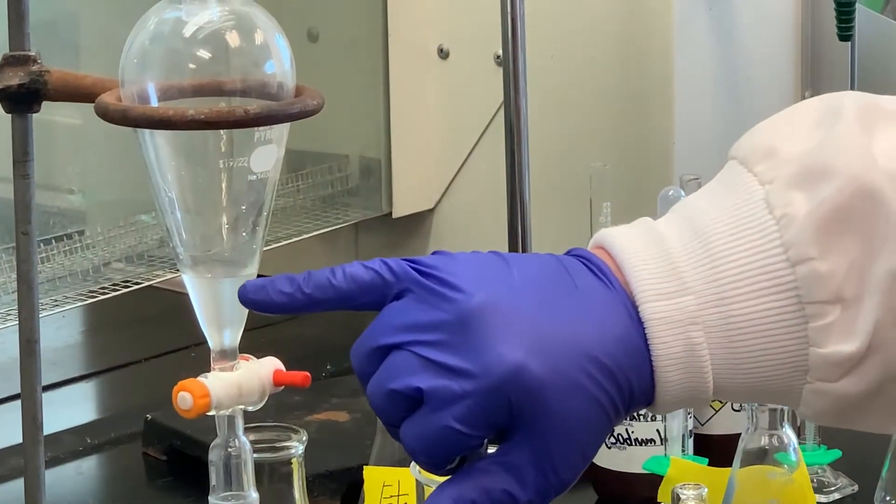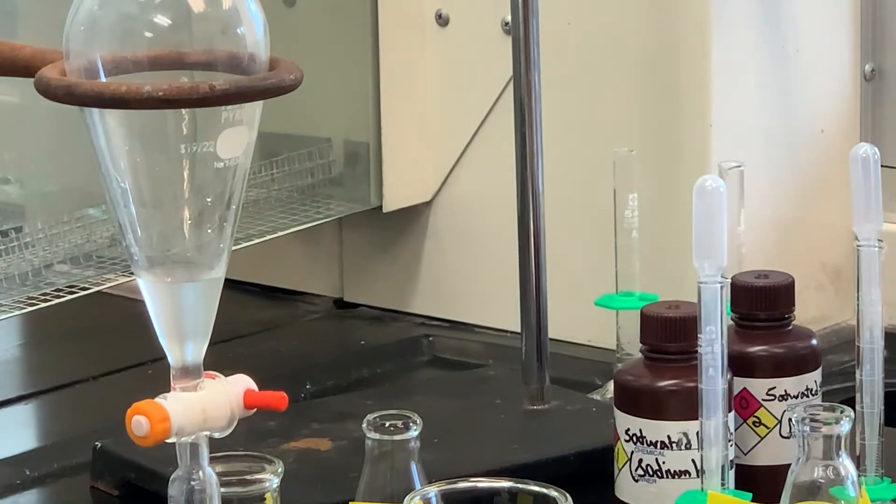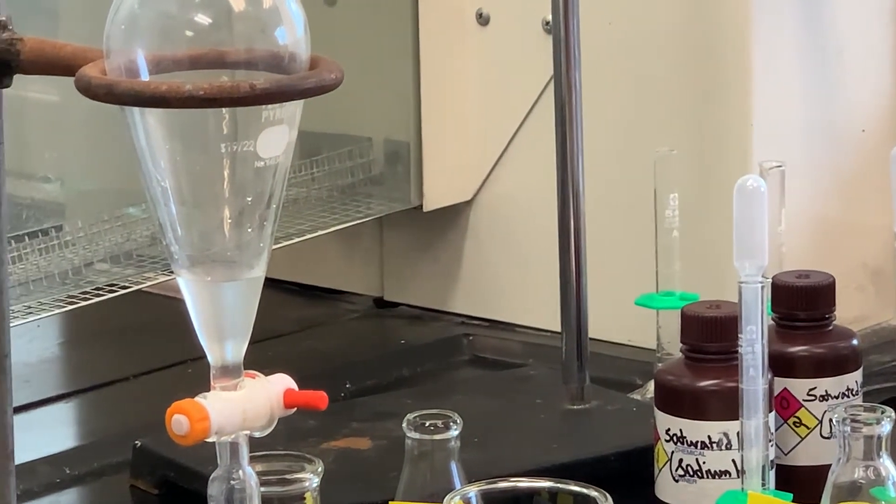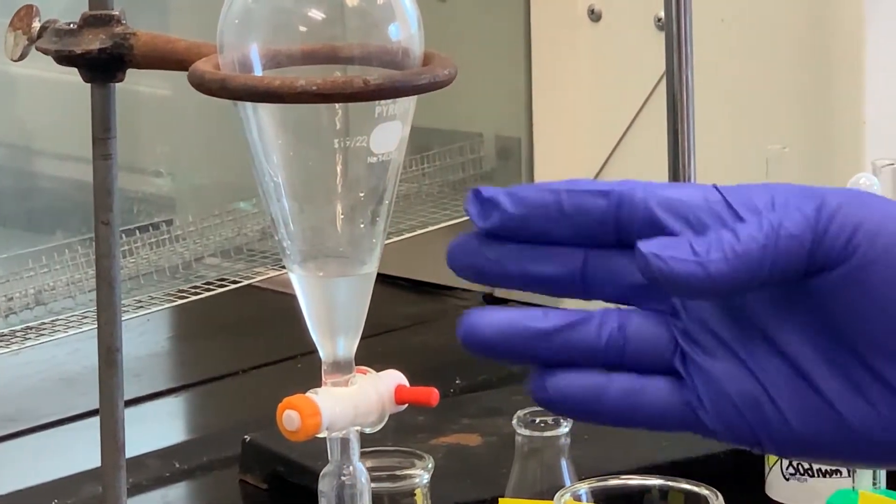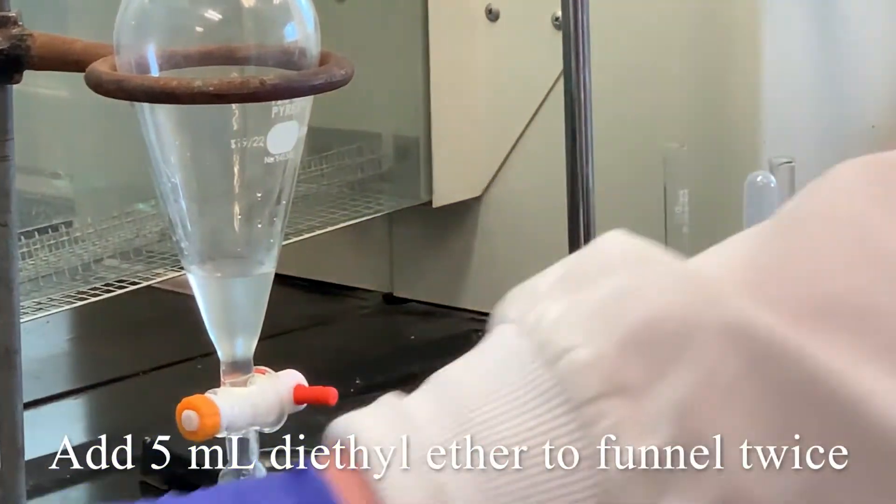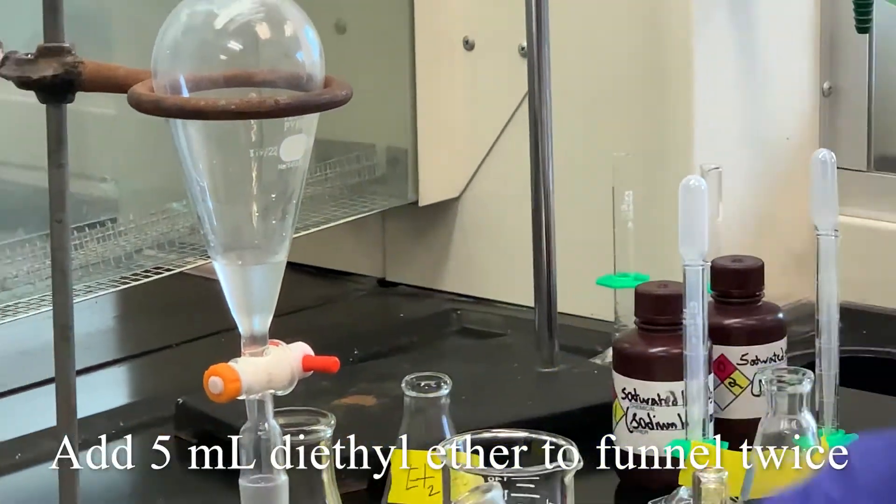It almost looks like a meniscus layer. That is the organic layer that we have. So what we're going to do, I'm going to add five milliliters of ether, diethyl ether, to this.